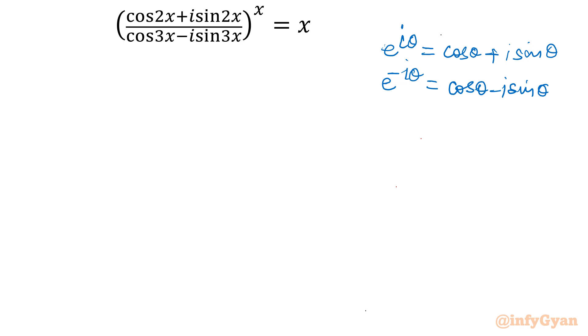As per our problem, numerator is cos 2x plus i sine 2x. We can write this as e raised to the power i theta. In place of theta, it is 2x, so e raised to the power i 2x.